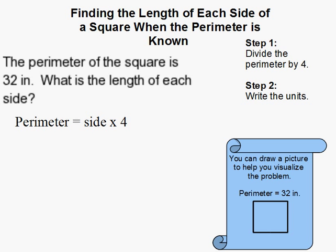How to find the length of each side of a square when the perimeter is known? This problem is actually very simple. Because a square has 4 equal sides, all you have to do to find the measure of each side is simply divide by 4.